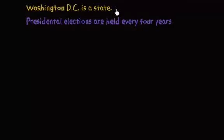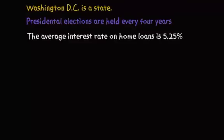The previous one, by the way, is false — Washington DC is not a state. Our third example: the average interest rate on home loans is 5.25%. Again, you can say true or false. Either way, it does carry factual information.